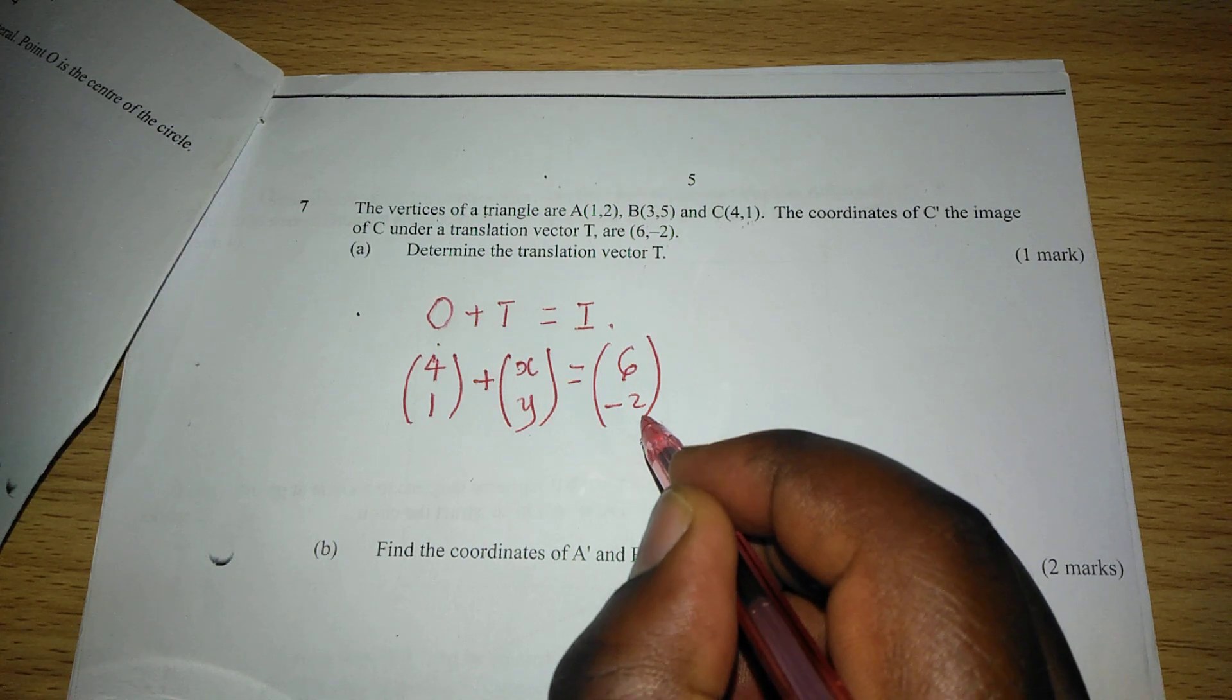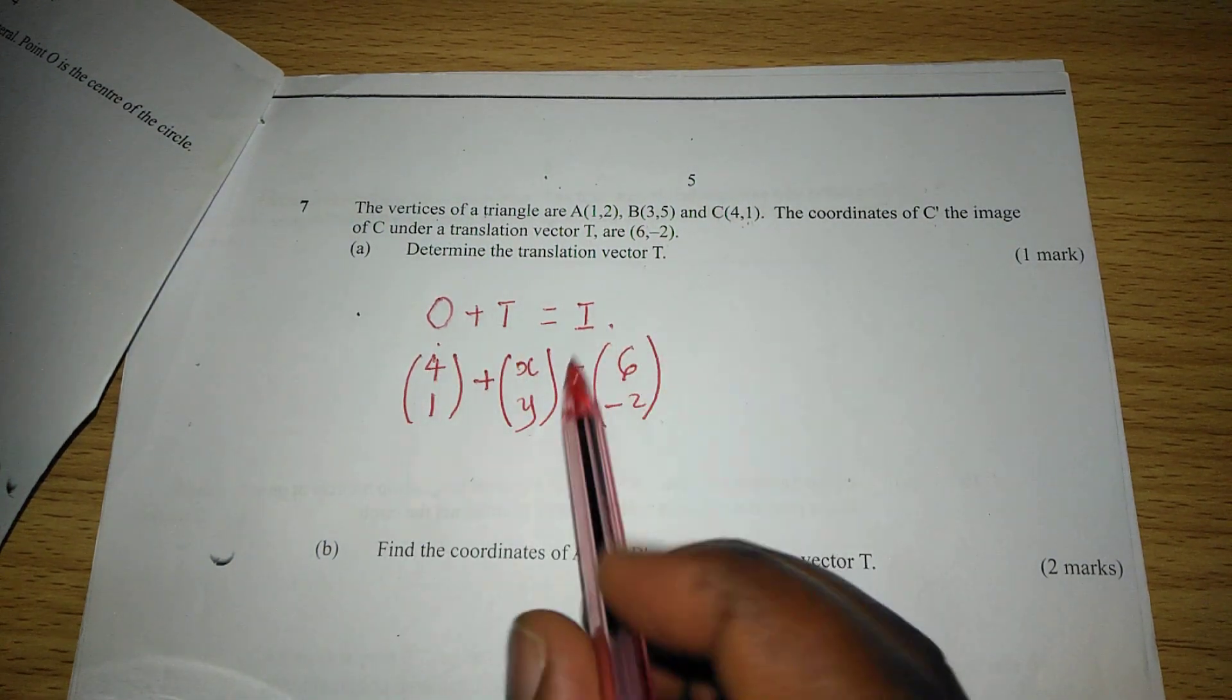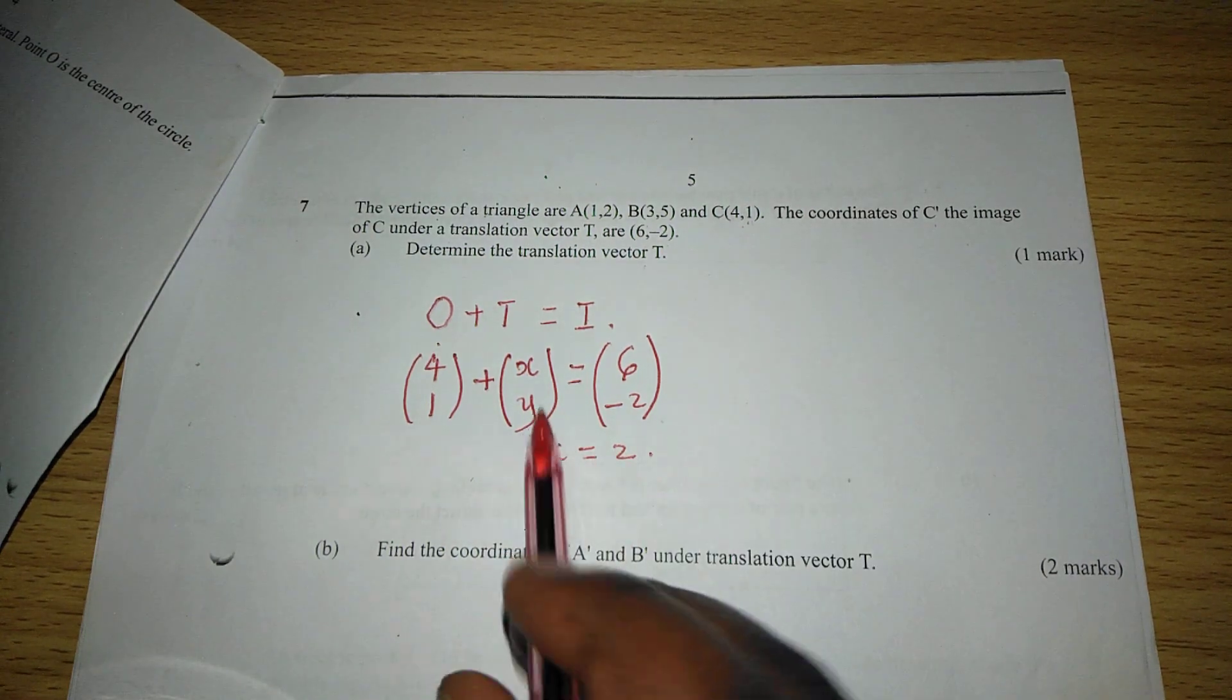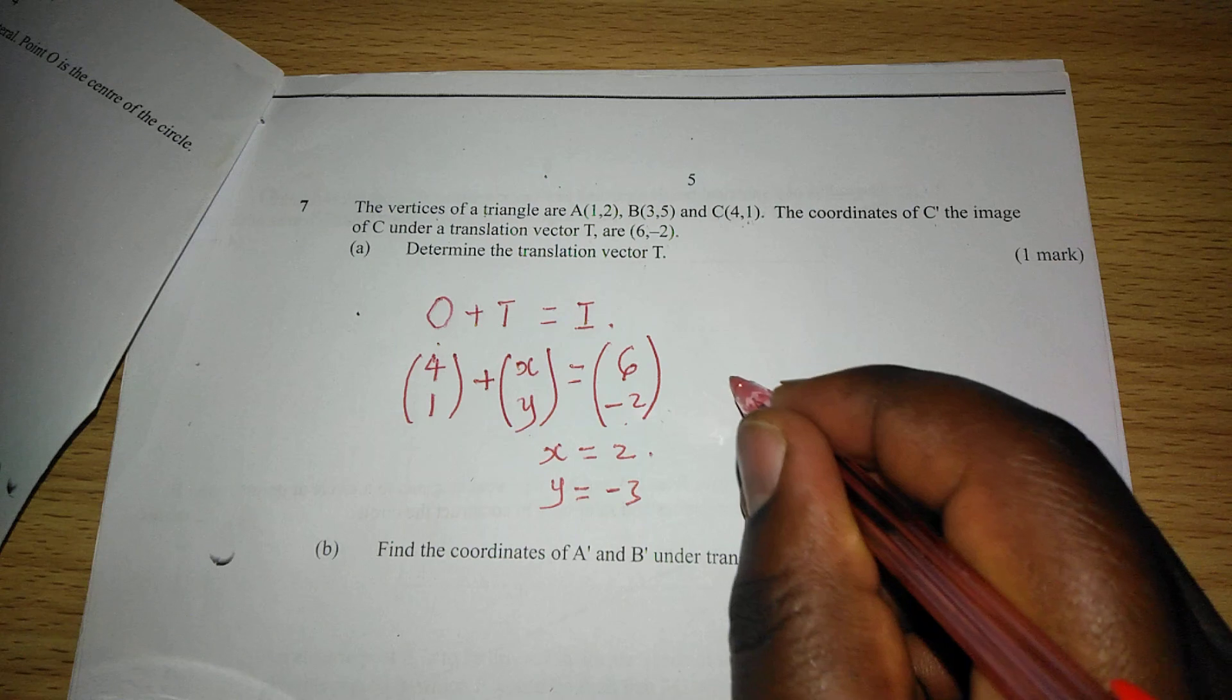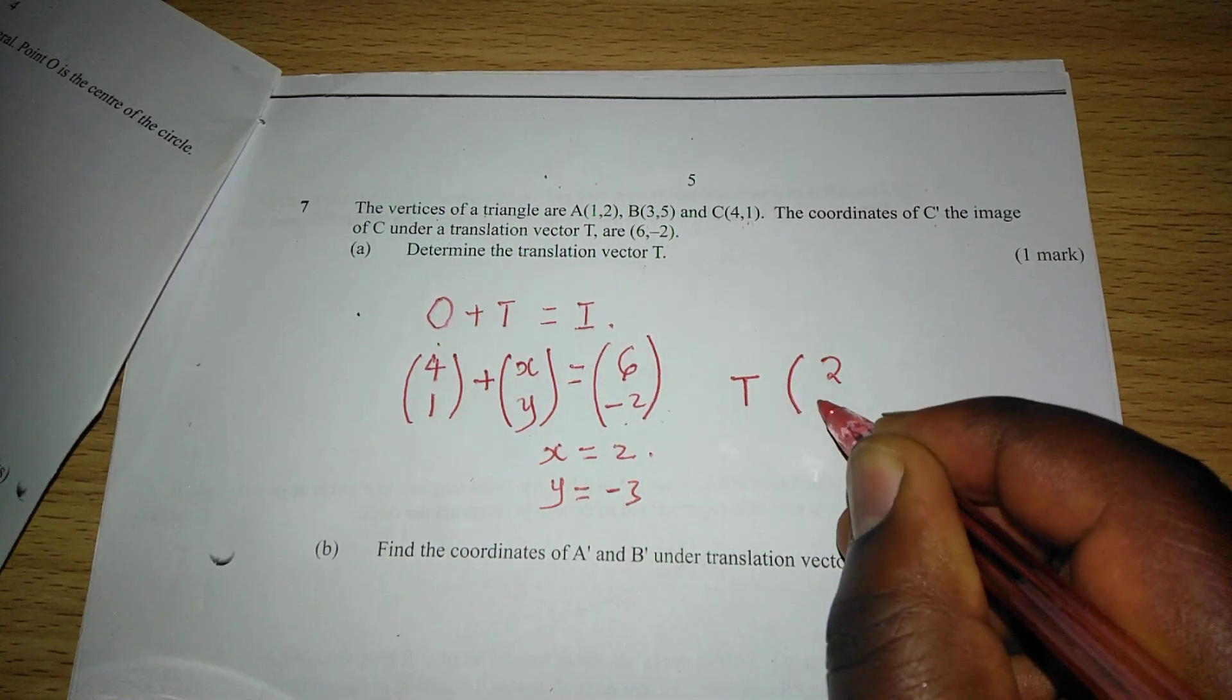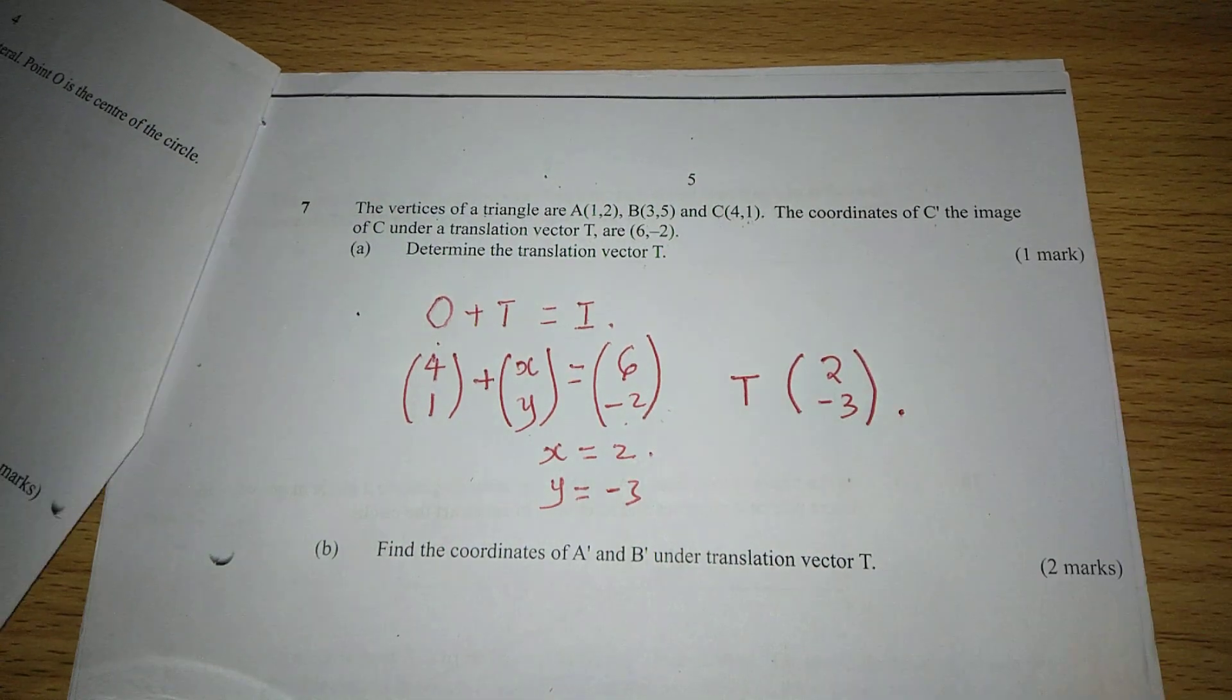Then this means we can get x as 6 minus 4, so x equals 2, and y is negative 2 minus 1, which is negative 3. Therefore, the translation vector T is (2,-3). That's how it should be expressed.